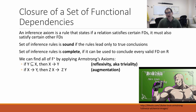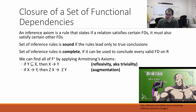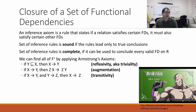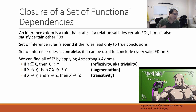Another rule, maybe a little bit less obvious, is called augmentation. If x functionally determines y, then zx functionally determines zy. If you stick z on both sides, of course that's still true — because if z is on the left side, then z can be on the right side. The last rule is called transitivity. If x functionally determines y, and y functionally determines z, then x also functionally determines z. If two rows with the same x must have the same y, and two rows with the same y must have the same z, then two rows with the same x must have the same z.